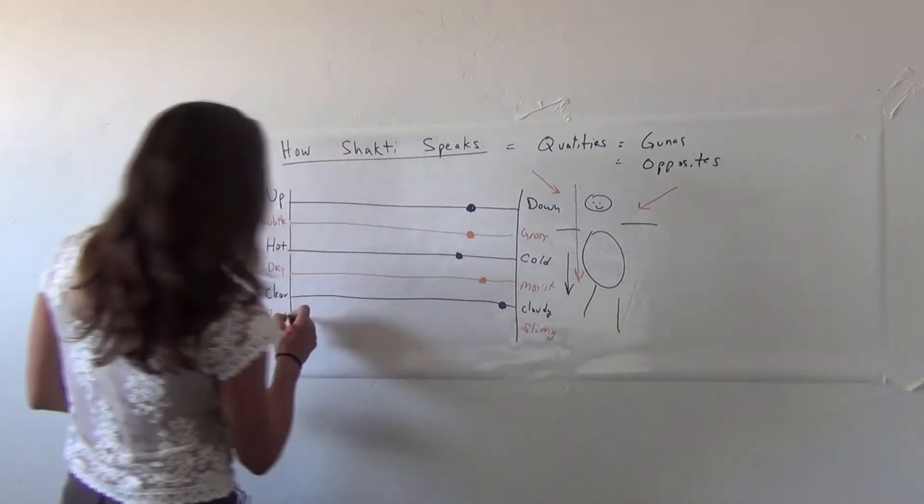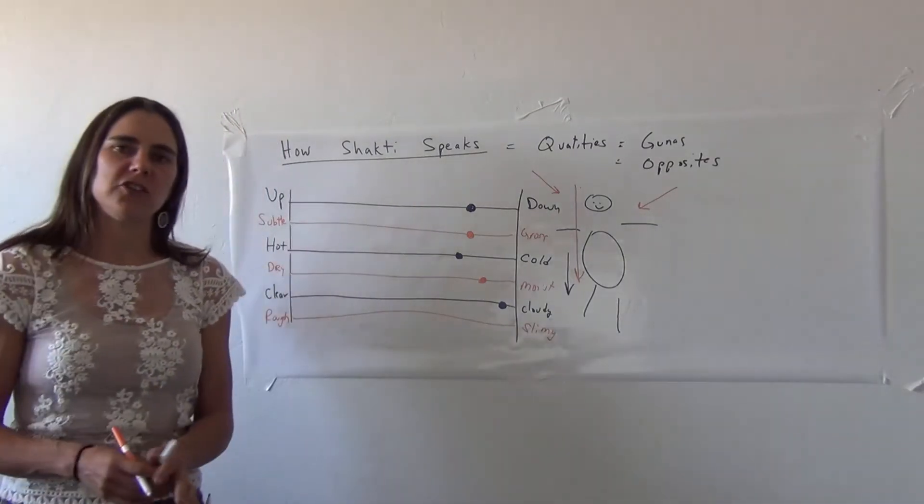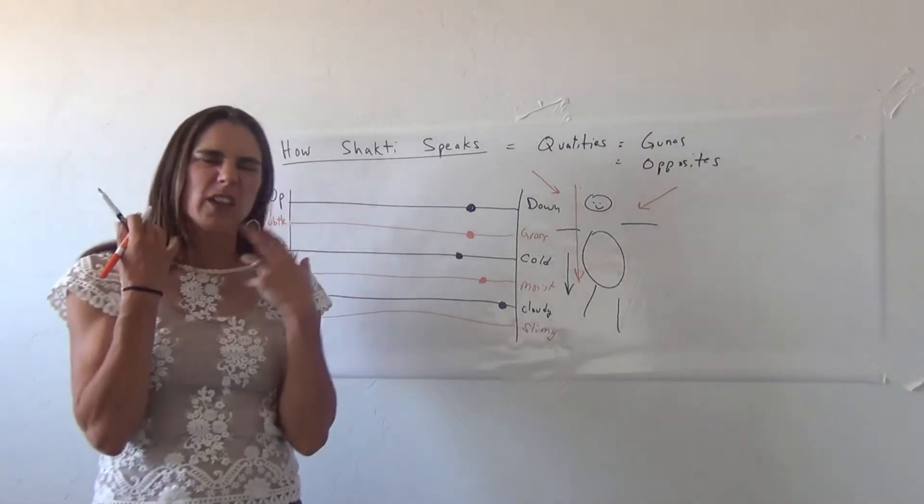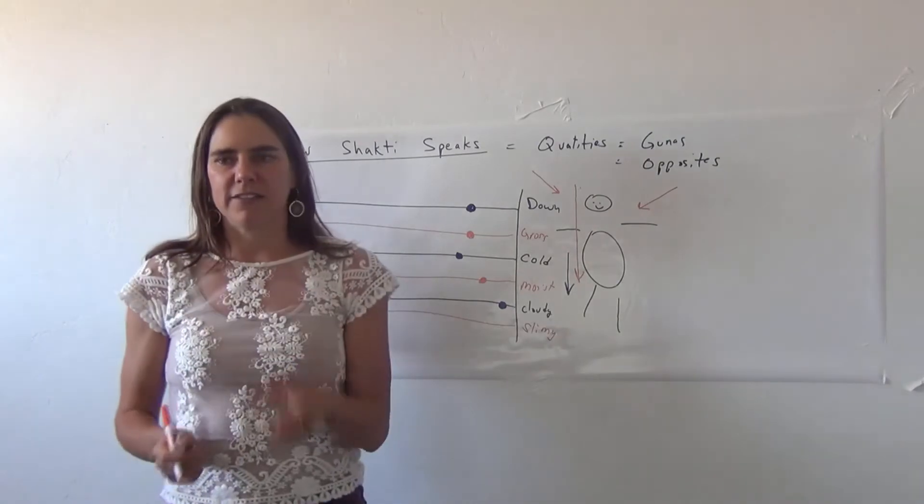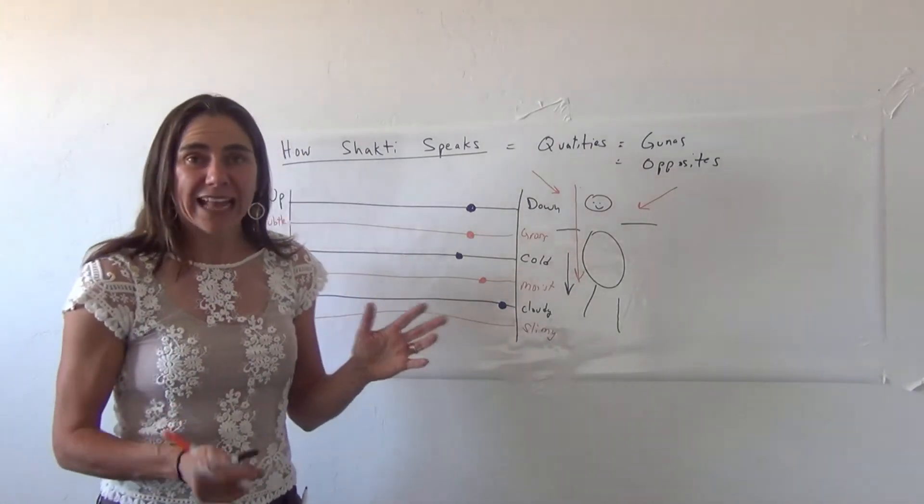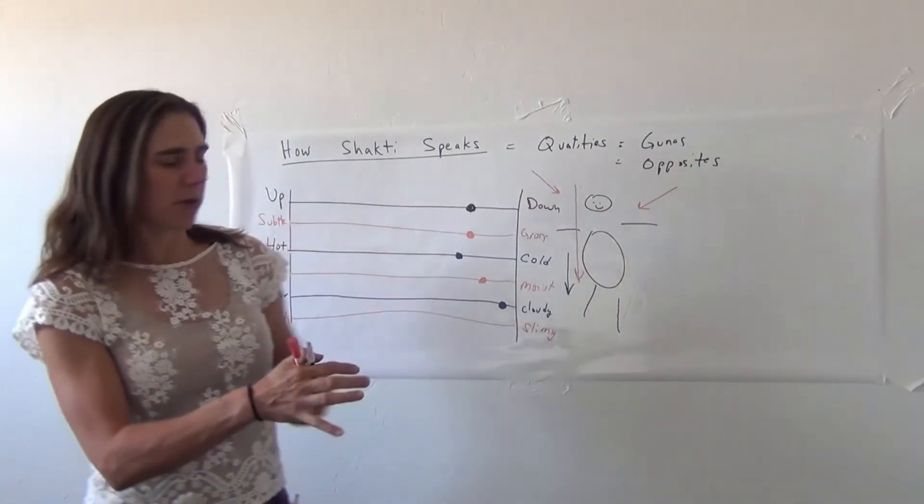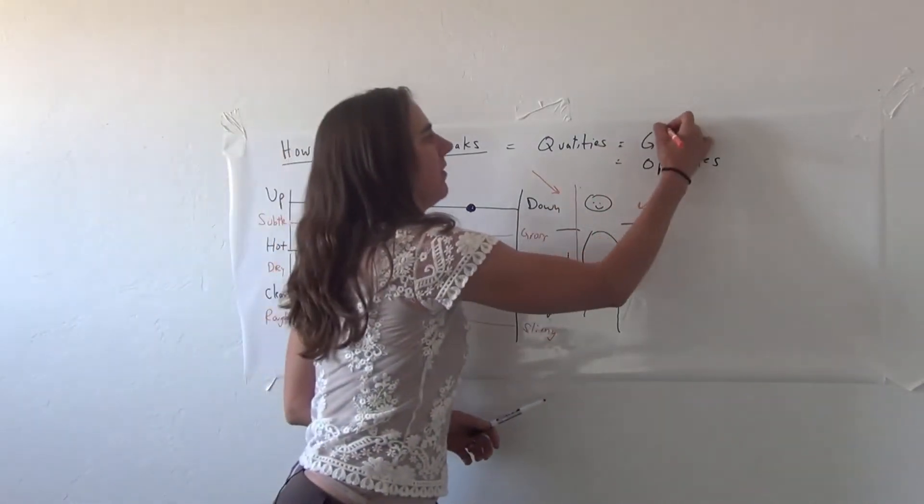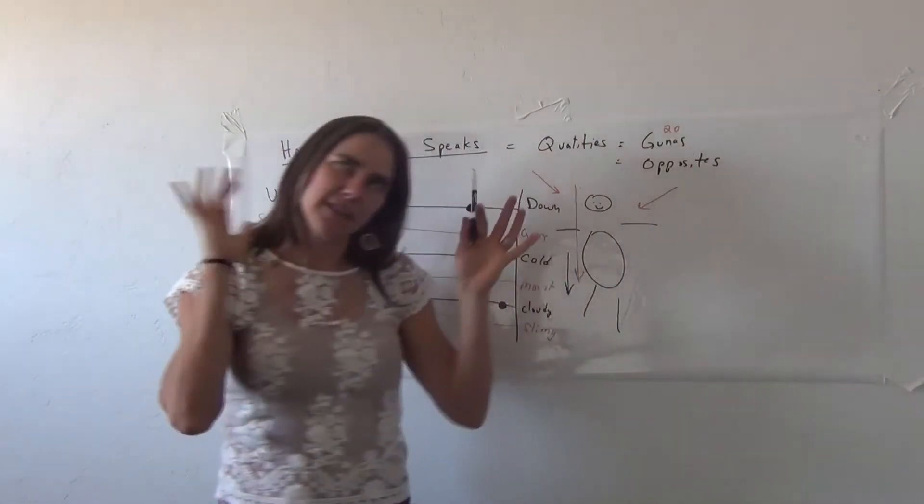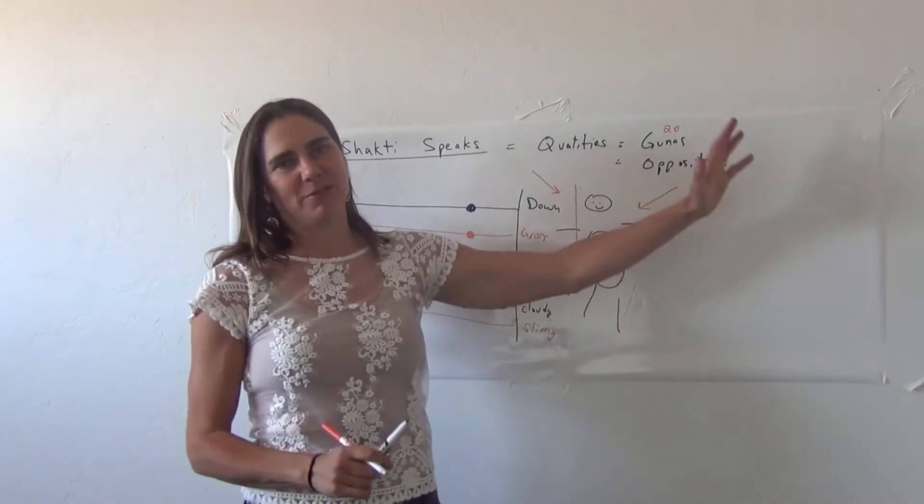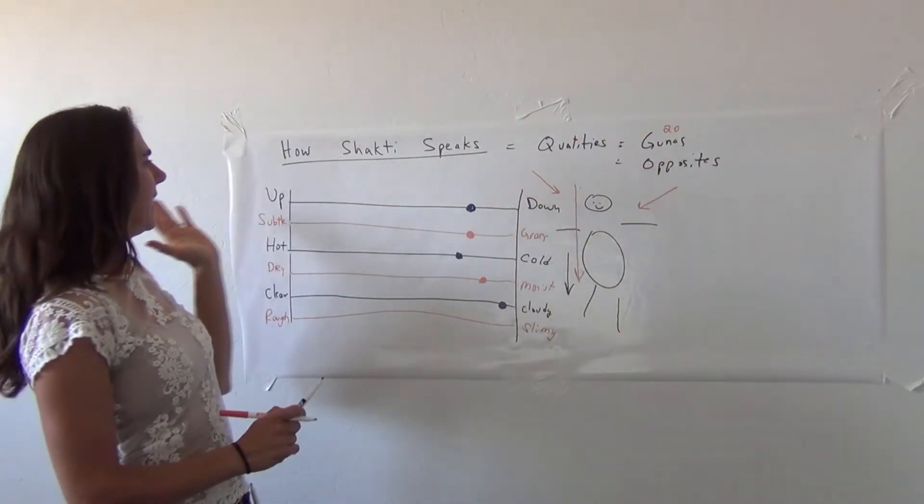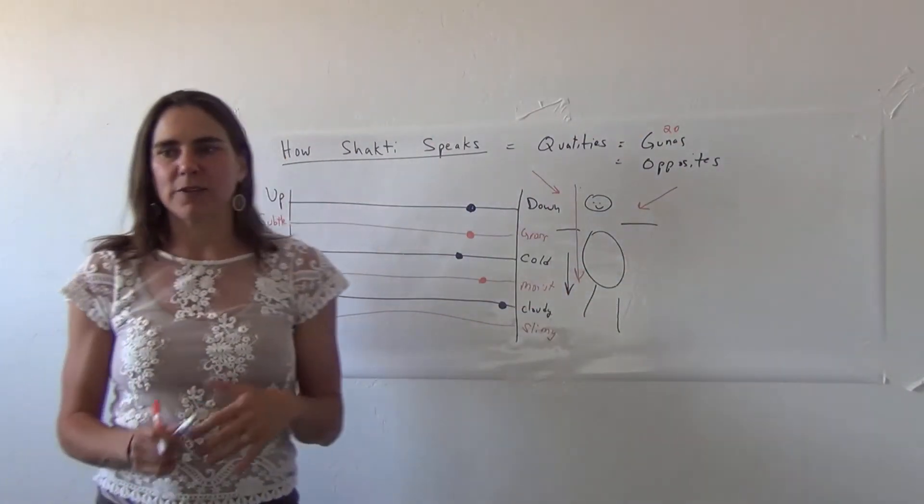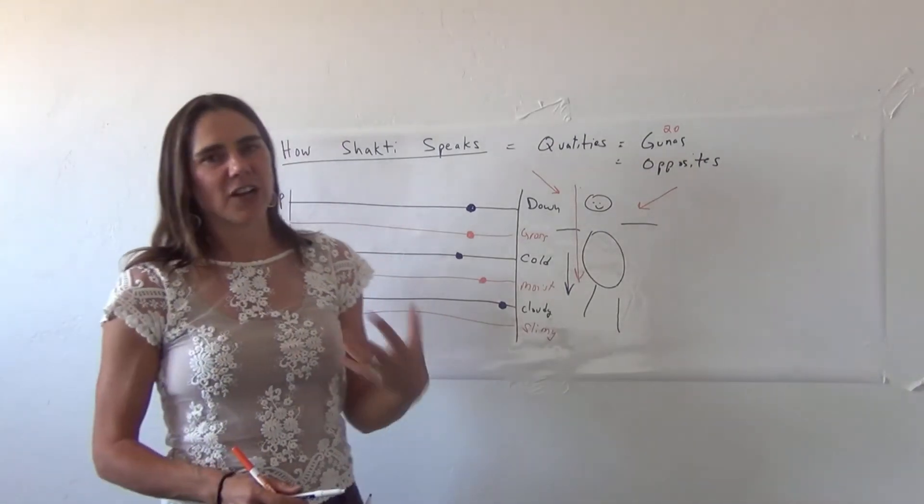There's other ones like rough versus smooth or slimy. Look at the worksheet that is the 20 gunas worksheet. There's a bunch of gunas. To me, the number doesn't really matter. It's just starting to understand these different spectrums, that there's these opposites.